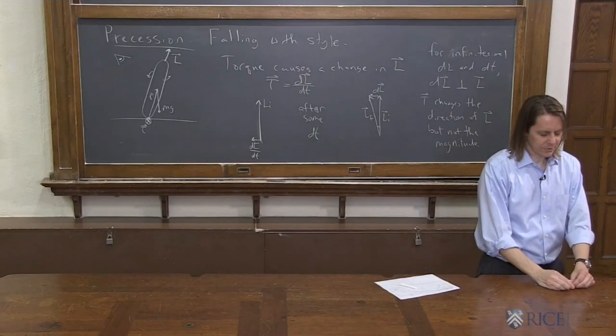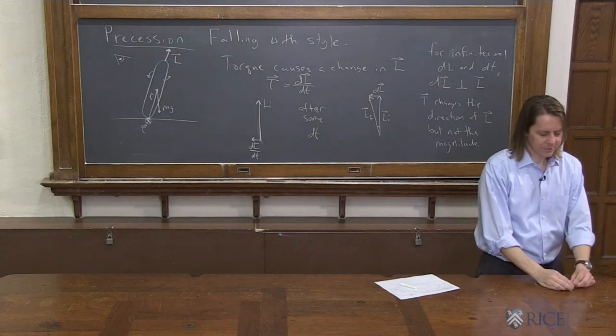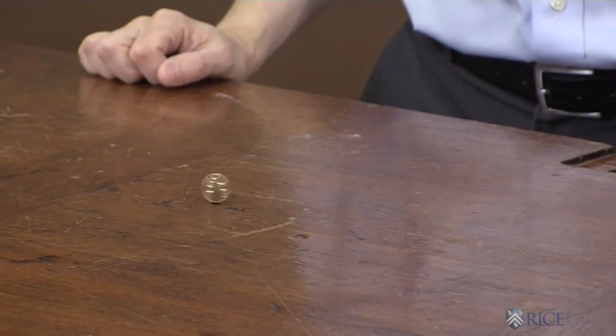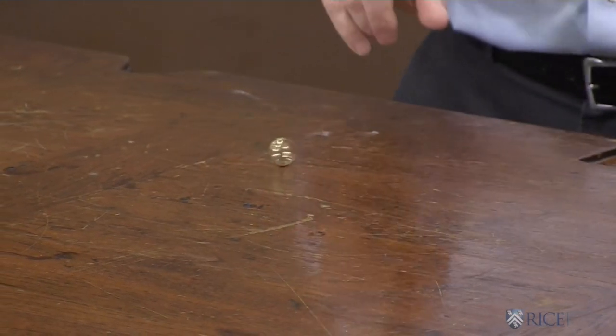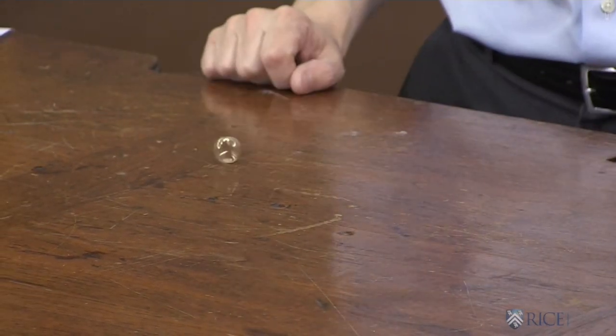As it goes in that circle, if you think about its L vector, if I slow it down a little bit, you can see that it goes in a circle. See the L vector points in, and it goes around, even on this rough table.